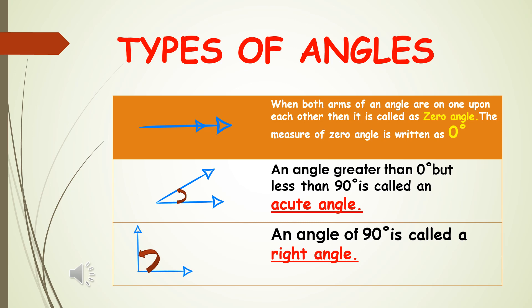Students, now we are going to learn different types of angles. First, when both arms of an angle lie one upon the other, it is called a zero angle. The measure of a zero angle is written as zero degrees. So we measure angles in terms of degrees.